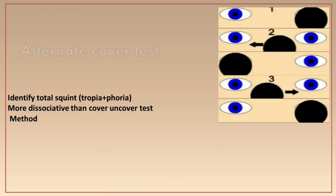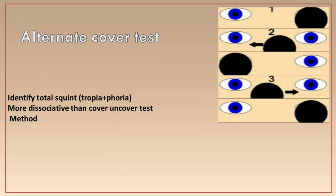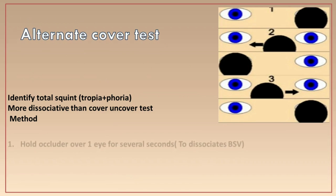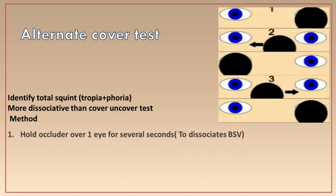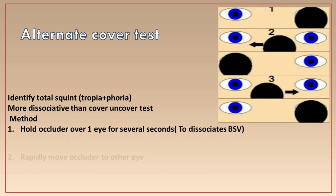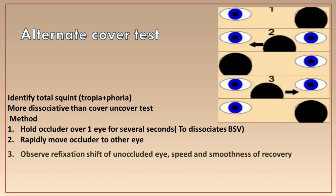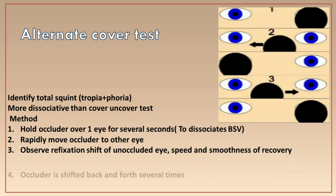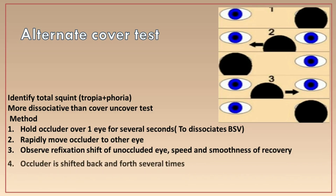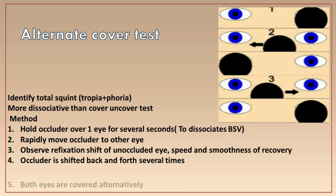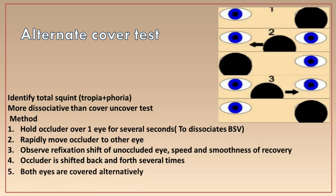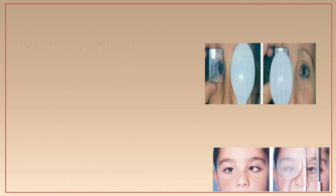The alternate cover test identifies the total deviation — both tropia and phoria — and is more dissociative than the cover-uncover test. To perform it, hold the occluder over one eye for several seconds to dissociate binocular single vision, then rapidly move the occluder to the other eye and observe the fixation shift. The speed and smoothness of recovery is noted as the occluder is shifted back and forth between eyes.